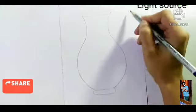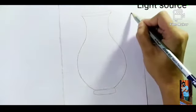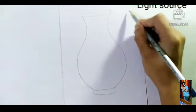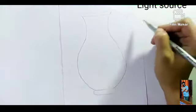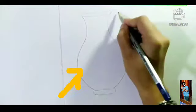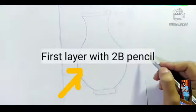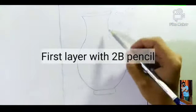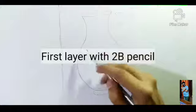Now I will tell you about the light source. The reflections opposite is shadow. This side will be set. The first layer will be 2B.